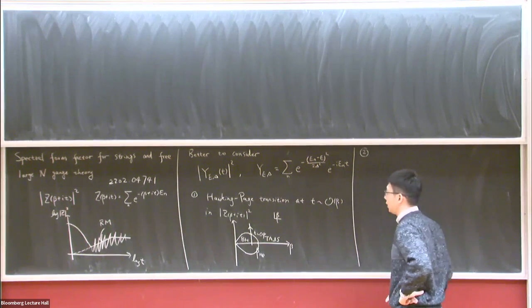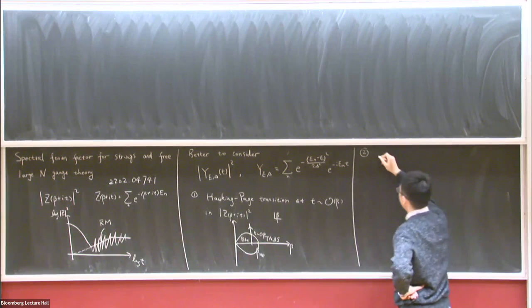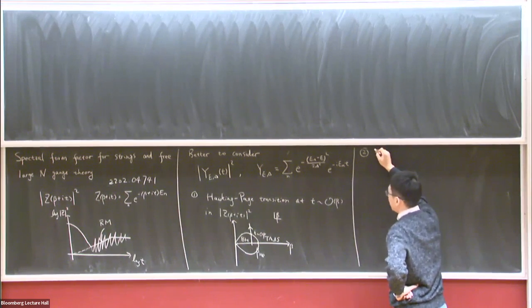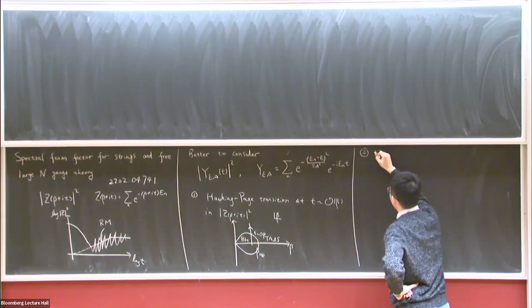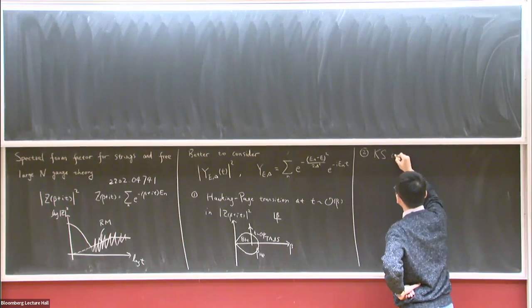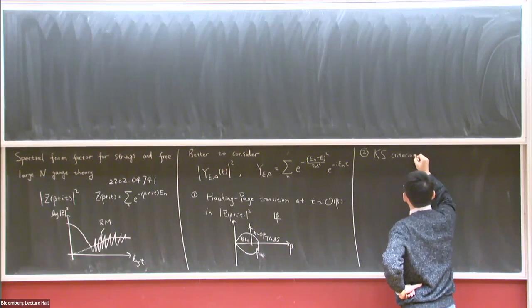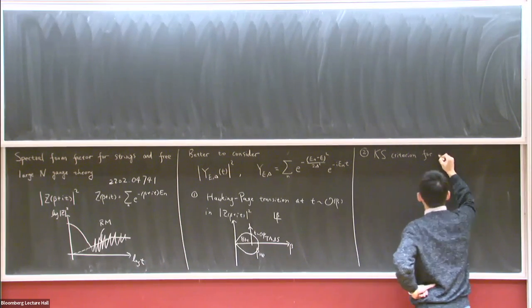So if we want to focus on the black hole at longer time scales, we would like to fix the energy window at some high-energy window so that the thermal AdS saddle won't contribute. That's the first reason. The second reason is closely related and is based on the Kontsevich-Segal criterion for a complex metric.